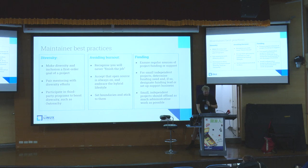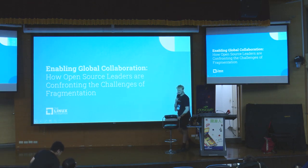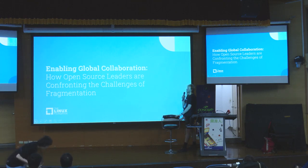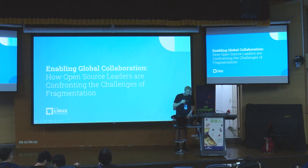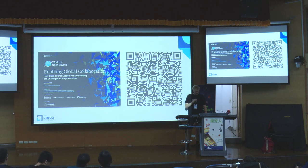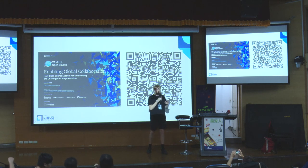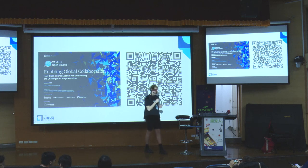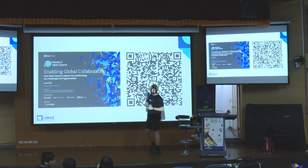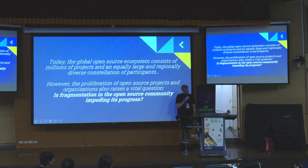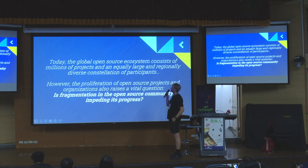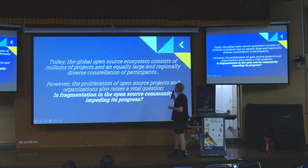The third report is on enabling global collaboration: how open source leaders are confronting the challenges of fragmentation. Fragmentation means different world regions working on similar things and duplicating efforts — whether geographically, in terms of software with similar libraries doing similar things, or in other ways. The motivating question is: today, the global open source ecosystem consists of millions of projects and an equally large and regionally diverse constellation of participants. However, the proliferation of open source projects and organizations raises a vital question — is fragmentation in the open source community impeding its progress?